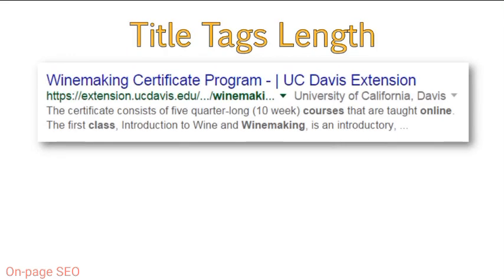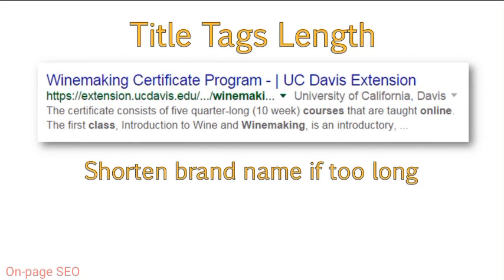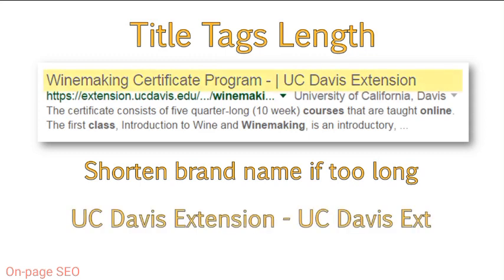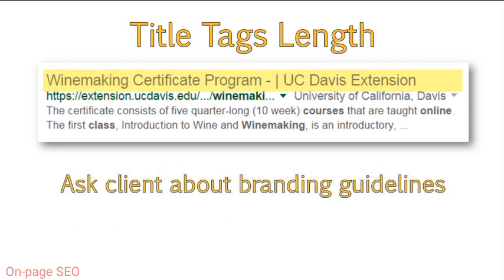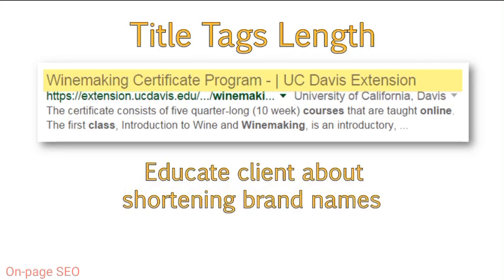If you have a longer brand name, you can also consider shortening it or abbreviating it. For example, if UC Davis Extension wanted to shorten their name, they might use 'UC Davis EXT.' Oftentimes, this falls under the company's branding guidelines, which state how the name should be displayed on all public-facing material. This is a great question to ask your clients when working on an SEO strategy. It's also a good idea to educate them about the benefits of shortening it, because a lot of times they have a preference for the full name, but upon learning the benefits, will agree to do so.